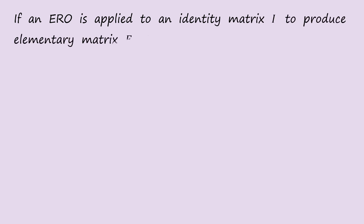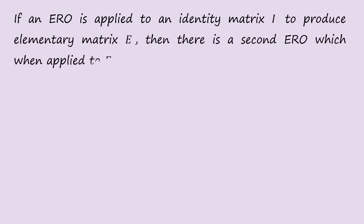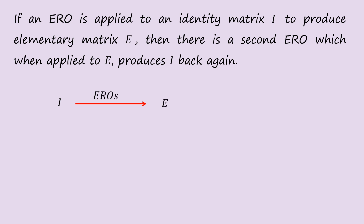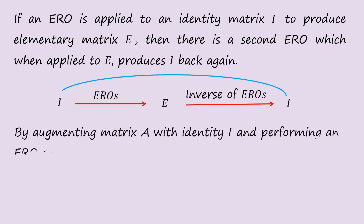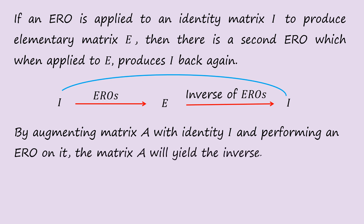If an E-row is applied to an identity matrix I to produce an elementary matrix E, then there is a second E-row which, when applied to E, produces I back again. So by augmenting matrix A with identity I and performing E-rows on it, matrix A will yield the inverse. Performing a sequence of E-rows on the augmented matrix gives us the identity and the inverse of A.